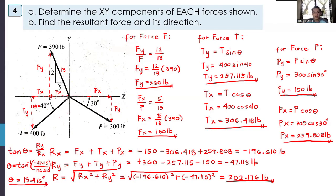Since Rx is negative (going left) and Ry is negative (going down), the resultant is in the third quadrant. Starting from 0 degrees, the resultant force is at 13.476 degrees below the negative X-axis — this is our final answer.